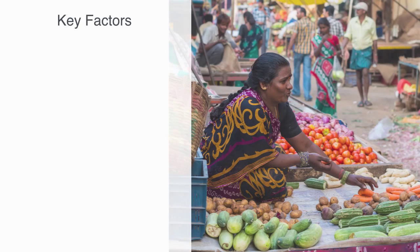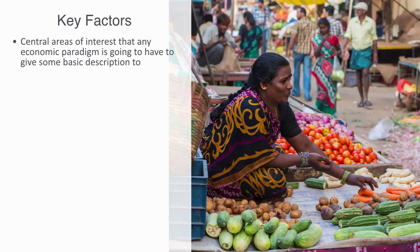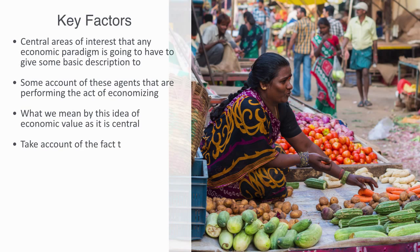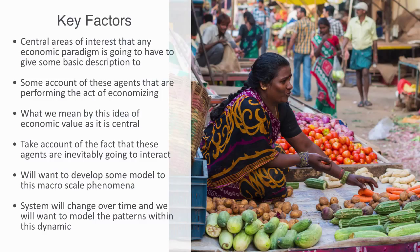Out of this definition, we can draw a number of central areas of interest that any economic theory is going to have to give some basic description to. These fundamental aspects of economics are typically broken down into micro and macro. On the micro level, we need some account of these agents that are performing the act of economizing in the pursuit of their ends. We'll also need some description for what we mean by this idea of economic value, as this is clearly central to the whole enterprise. We'll need to take account of the fact that these agents are inevitably going to interact, and these interactions are going to be another key part of the whole dynamic. And this is all happening on the micro level, which will inevitably lead to enduring macro scale patterns of organization, such as whole economies. Thus, we'll need to develop some model to these macro scale phenomena. And lastly, this whole system is going to be changing over time, and we'll be interested in trying to model the patterns within this dynamic. We'll spend the rest of this module discussing each of these areas separately.